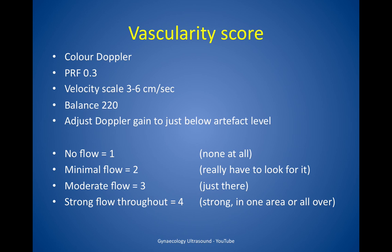Vascularity. The vascularity of a lesion is determined using colour Doppler. It's important to set the right sensitivities: use a PRF of 0.3, equivalent to a velocity scale of 3 to 6 cm per second, a balance of 220, then adjust the Doppler gain to just below the artefact level. No flow is scored as 1; minimal flow where you have to look for it is 2; moderate flow where flow is present is 3; and strong flow throughout or in one area is 4.